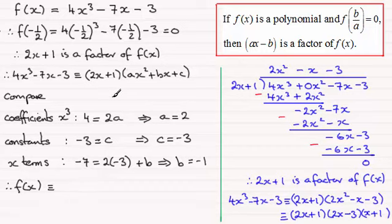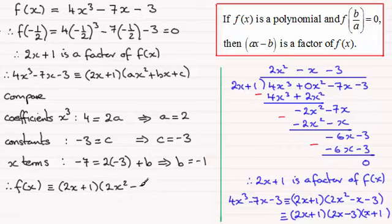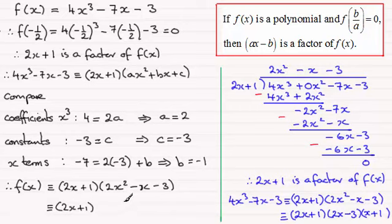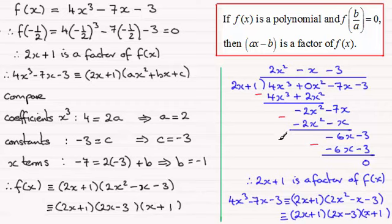Therefore f(x) is identical to 2x plus 1 multiplied by ax squared plus bx plus c, where a is 2, b is minus 1, and c is minus 3. So that gives us 2x plus 1 times 2x squared minus x minus 3, which matches what we had before. The quadratic factor breaks down further into two linear factors: 2x minus 3 and x plus 1.